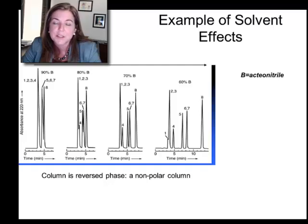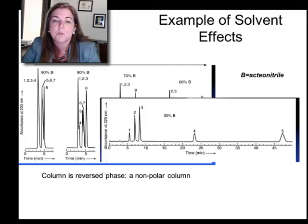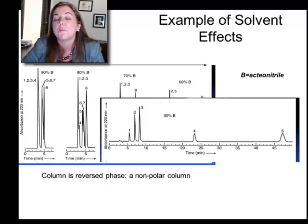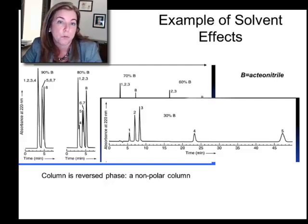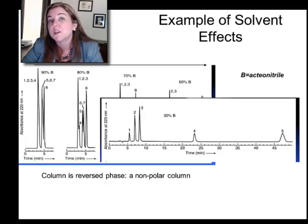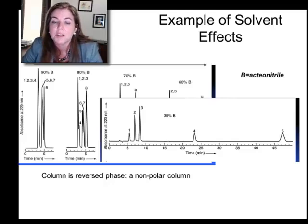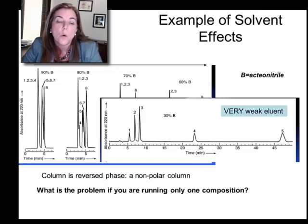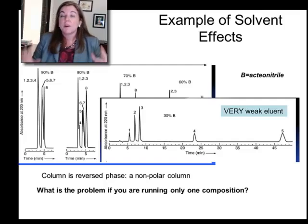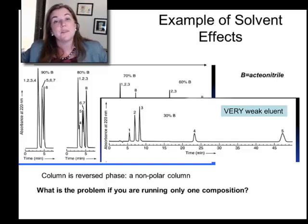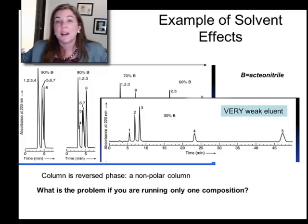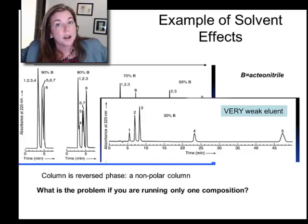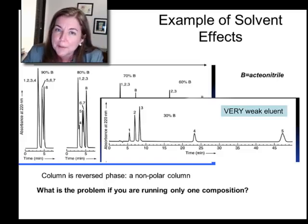Going back to solvent effects: when we ran 30% acetonitrile and 70% water, we were able to pull apart peaks one, two, and three, but to even get to peak five we had to wait 46 minutes. The question is: what can you do if you're only running a single solvent composition? You're always going to have this problem that if you have a lot of analytes, some more polar than others, you may have to wait a really long time for them all to come off the column.